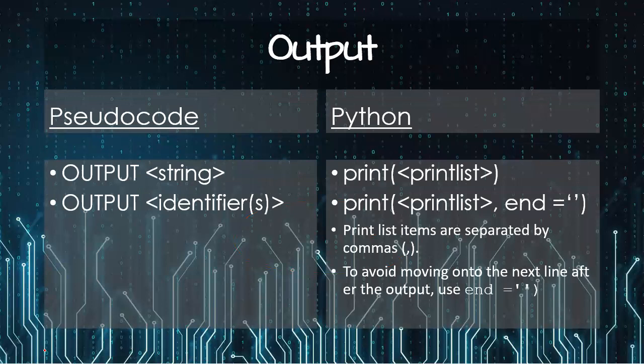Then comes the output. We have done this before in the previous lesson as well. For the pseudocode we use the word output. Anything that you have to display or show to the user you use the output keyword. You can have a string or you can have identifiers. Identifiers are the names of the variables. And you can have multiple variables or a very long string, but for the string it should have double quotes.